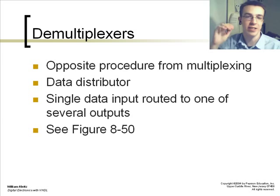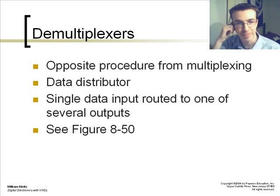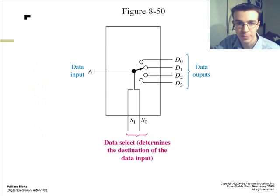Demultiplexers, on the other hand, are opposite procedure for multiplexing. It's a data distributor, a single data input routed to one of the several outputs. So, this way, you take your data input, which is a 1-bit value, and select it to one of the four data outputs, D0 through D3. This determines the destination of your data input.